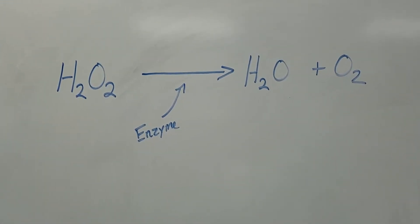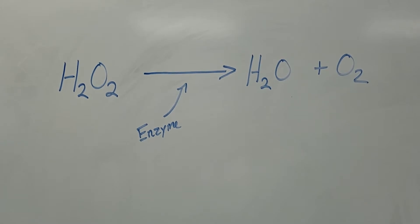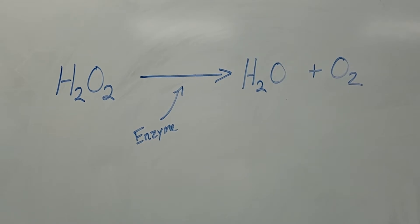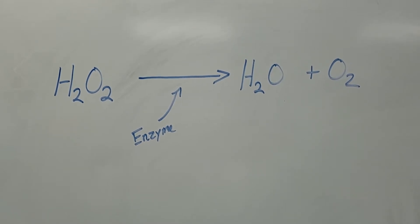For this lab today we're going to use hydrogen peroxide as our reactant and it's going to break down into the products of water and oxygen gas. This reaction can occur spontaneously and can also happen in the presence of heat. But for today we're going to use an enzyme to make this reaction speed up.